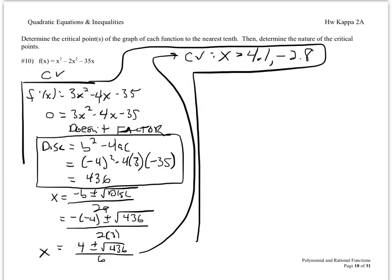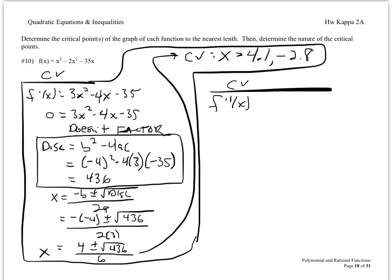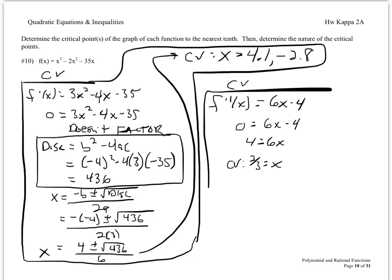So we just found two critical values from the first derivative. Next, we'll find more critical values from the second derivative, f double prime of x, which equals 6x minus 4. Set this equal to zero and solve for x. You get a critical value of 2/3, which rounded to the nearest tenth is 0.7.